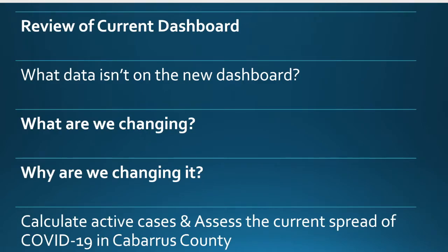Today we're going to review the current dashboard, look at some data that is not in the new dashboard, and talk about what the new data is going to look like — that's at the state's website right now, but it will be on the CHA website in the future. We'll talk briefly about why we're making this change, and at the very end, talk about how you can calculate active cases and some better ways to assess the current spread of COVID-19 in Cabarrus County.